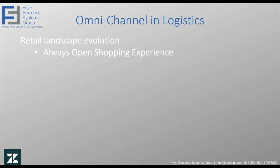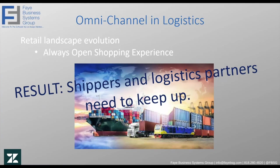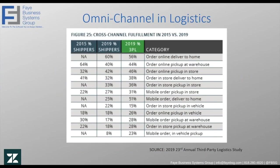Omnichannel in logistics extends a little bit past just communicating and creating different ways to talk to our customers. The retail landscape evolution is creating an always-open shopping experience, and the result is that shippers and logistics partners need to keep up the pace. Looking at the 2019 23rd Annual Third-Party Logistics Study, some categories of shipment weren't even factored in in 2015 and are now taking over a lot of business in 2019. For instance, order-online-delivered-to-home — 60% of shippers say that's part of their business now, and 56% of 3PLs agree.